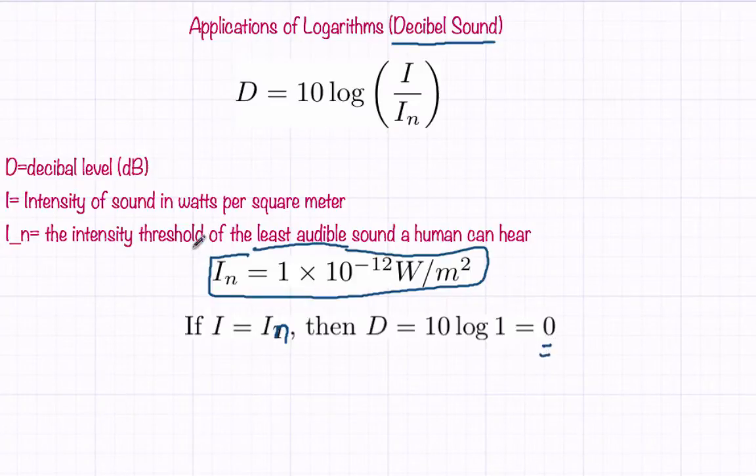When we talk about things that have sound intensity or decibel levels, one of the big things is like an iPod. The sound intensity there on an iPod is equal to 1 times 10 to the negative 2, which means that the decibel level is about 100.